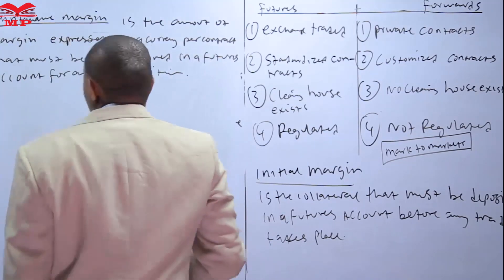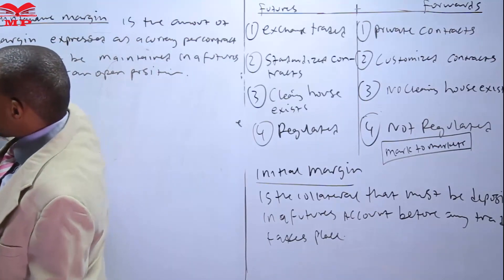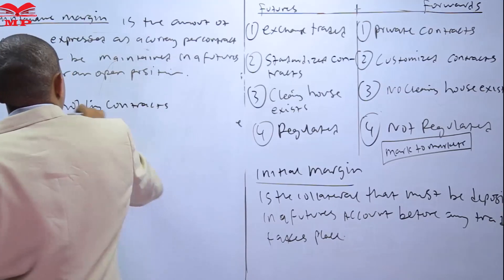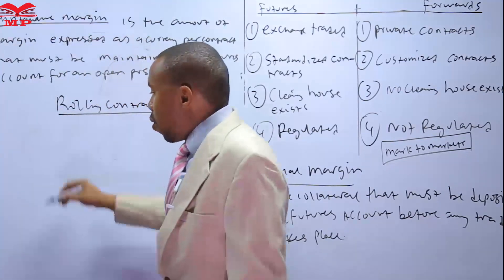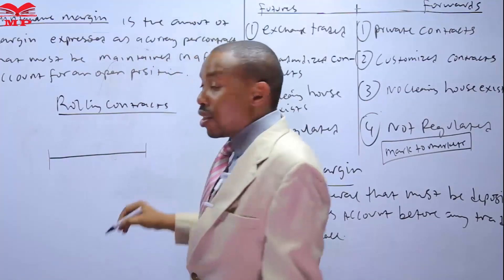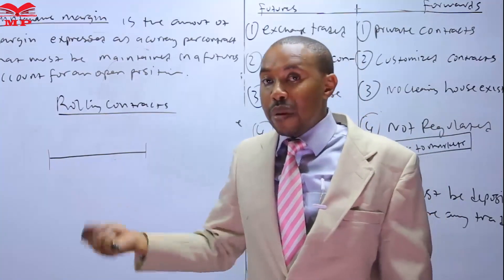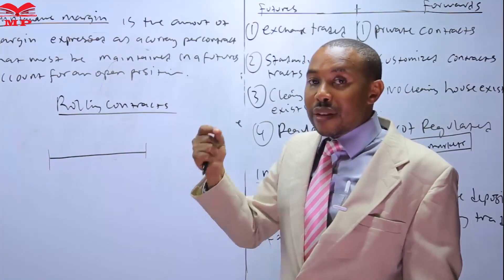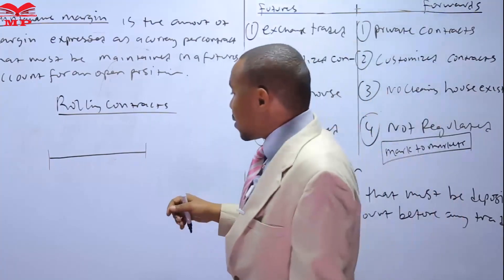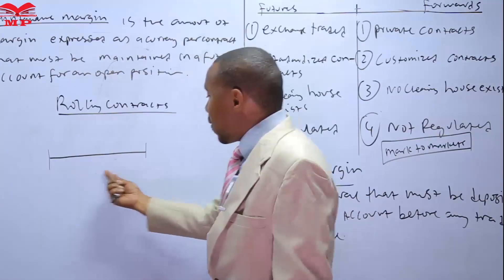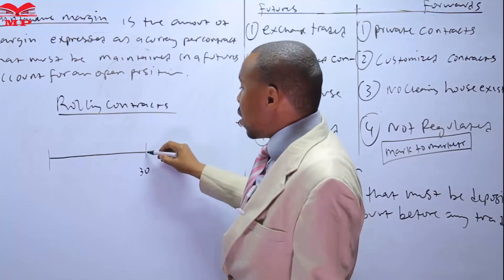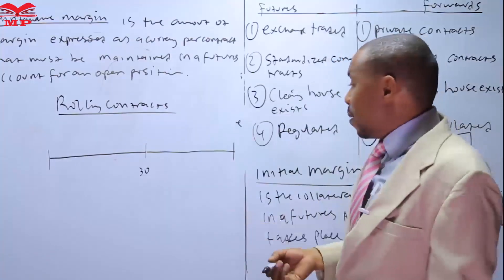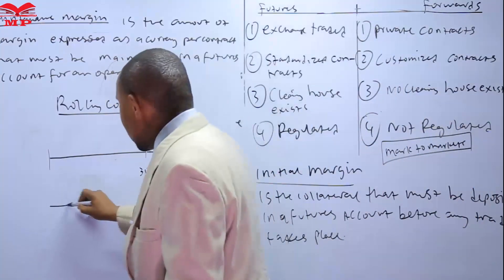Now we move on to rolling contracts. Because futures contracts usually tend to expire within 30, 60, or maybe even 90 days, if an investor wants to continuously seek exposure to futures, at the end of the first contract — say 30 days from now — they need to reestablish a new position that will continuously provide that desired exposure.